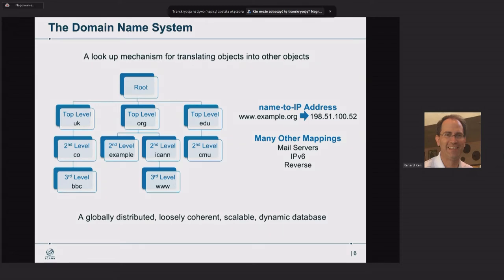The Domain Name System is a hierarchical layout of essentially databases, or zones. The typical transaction is to use a name to look up an IP address — for example, www.example.org — by contacting a name server and getting back the IP address. IP address lookup is one of many things DNS stores; DNS is also where we find email server mappings, reverse mappings from IP addresses to names, and other service and security parameters. DNS provides a globally distributed, coherent, and very scalable database.